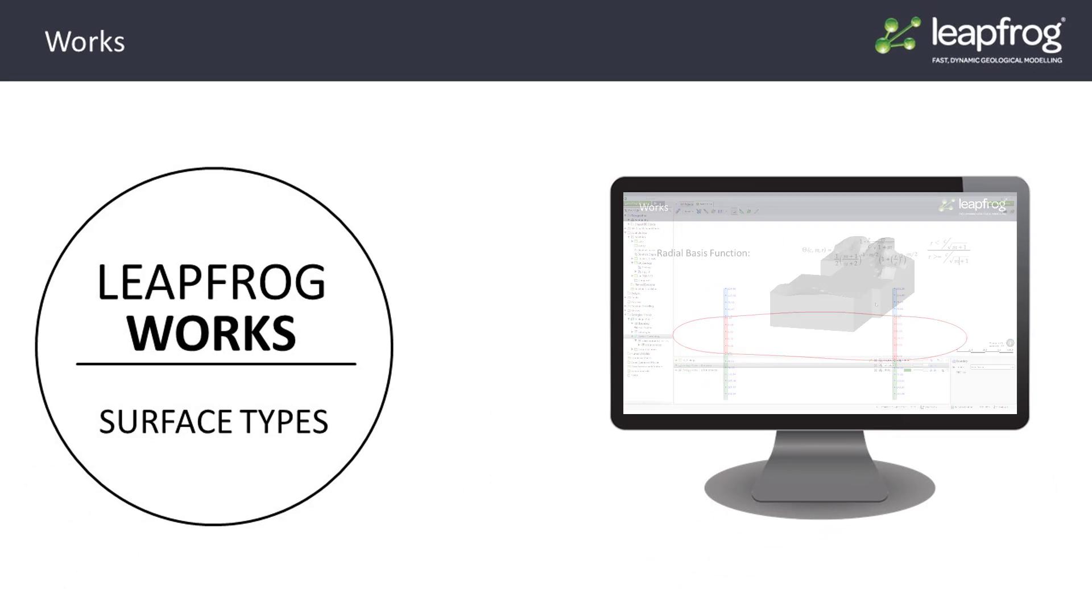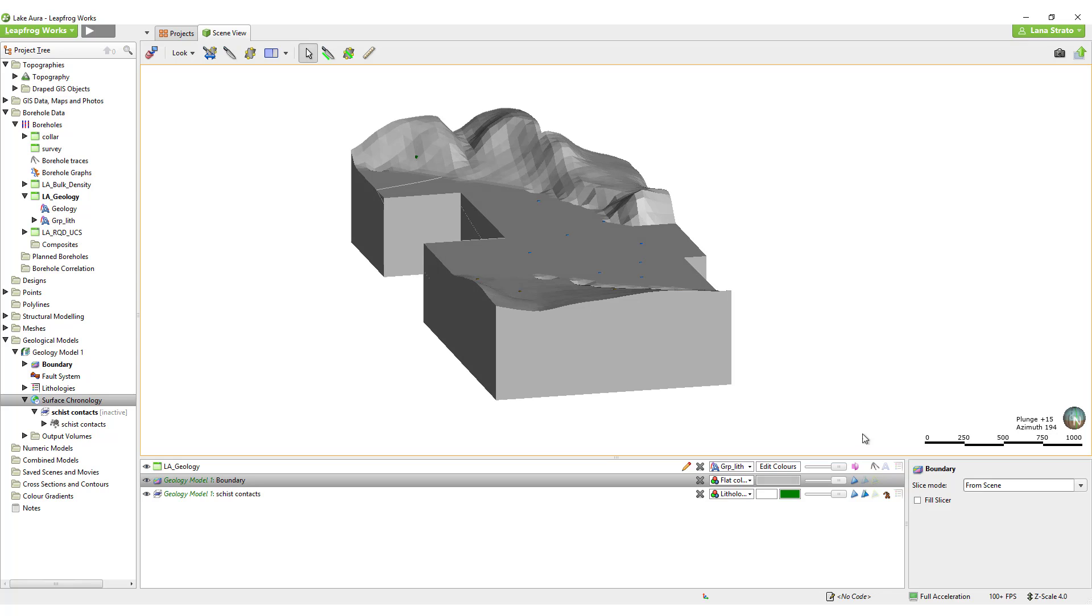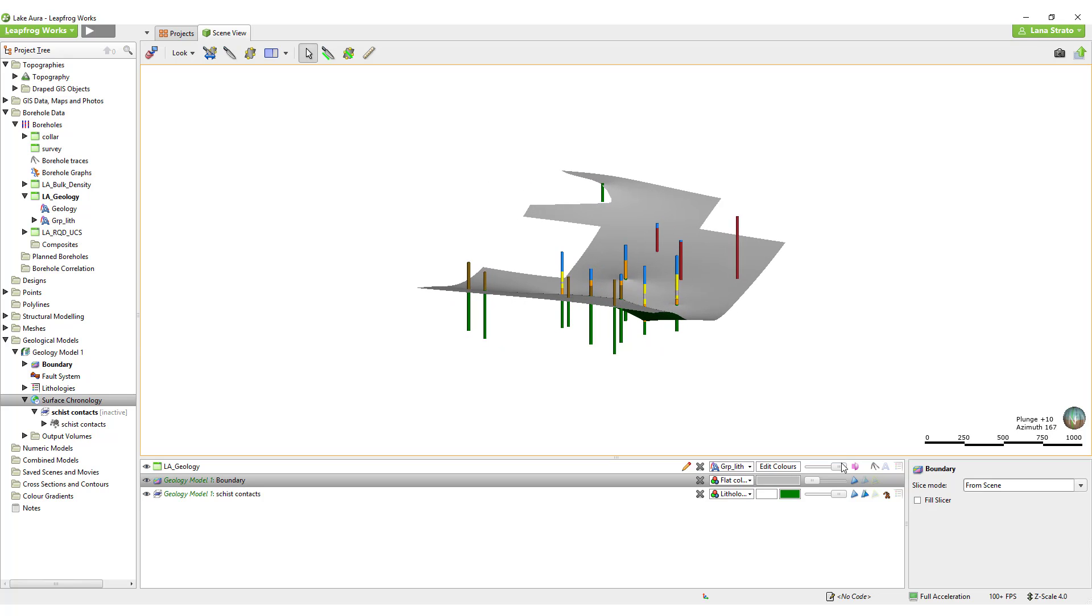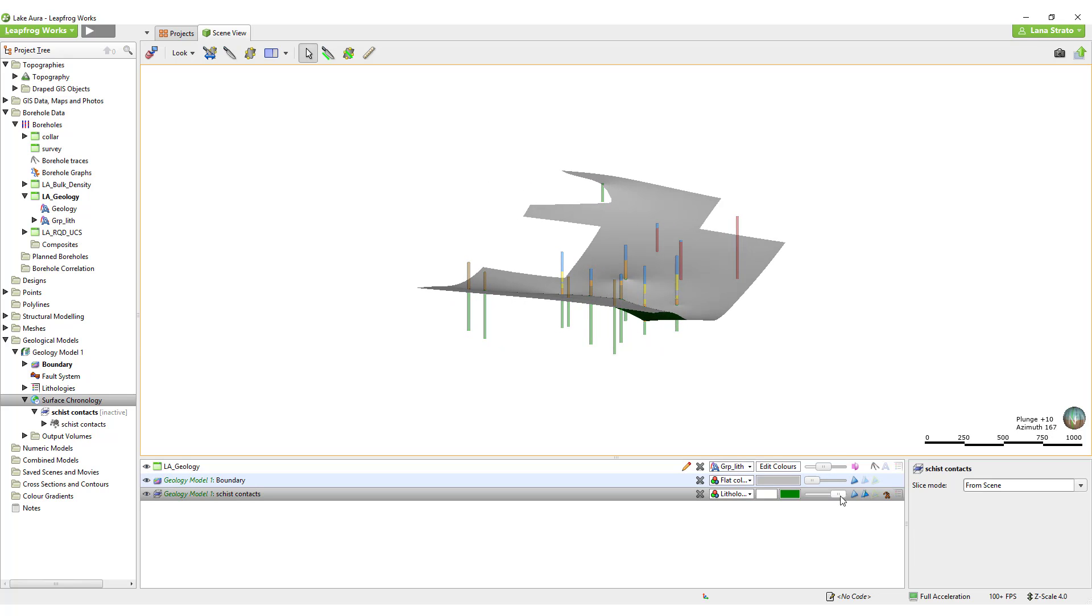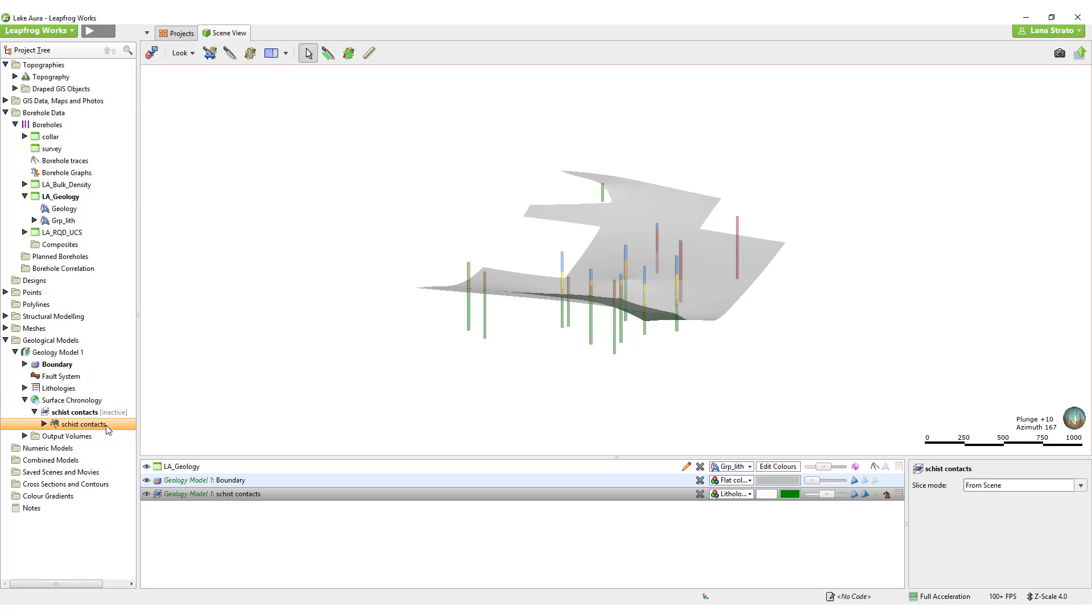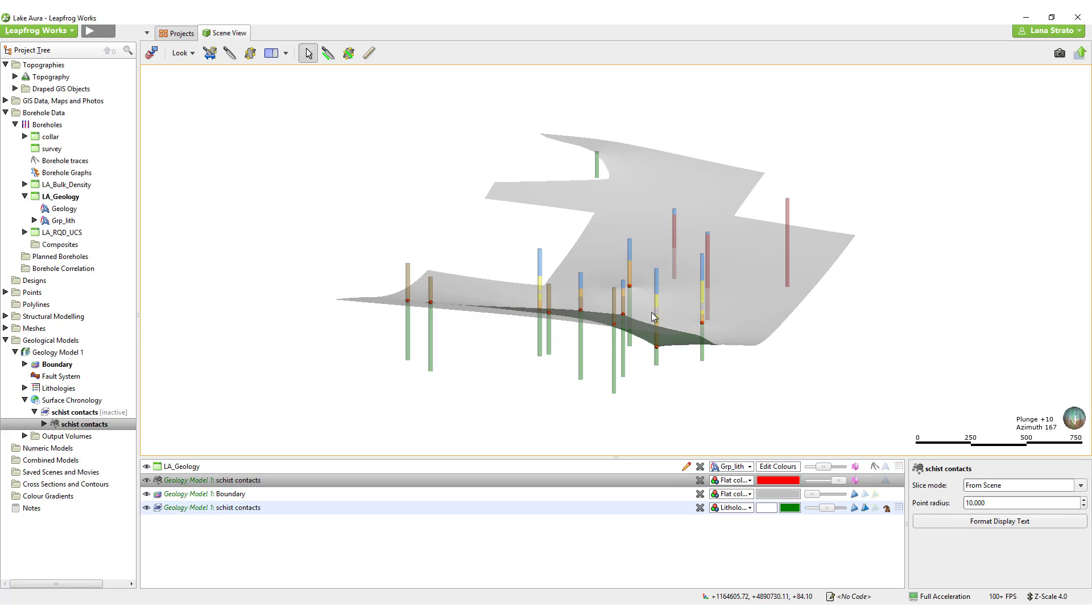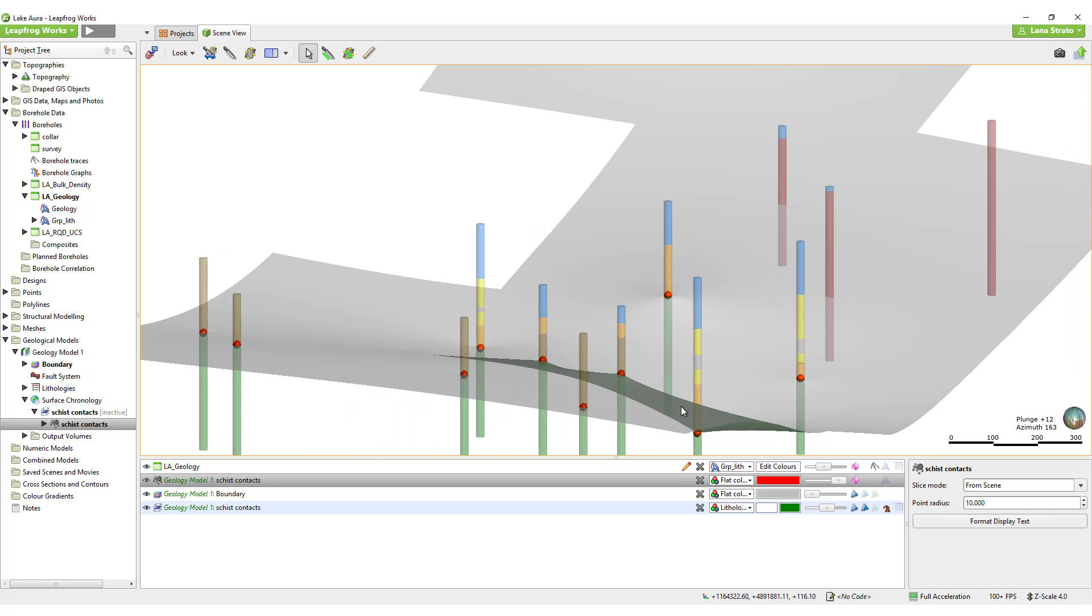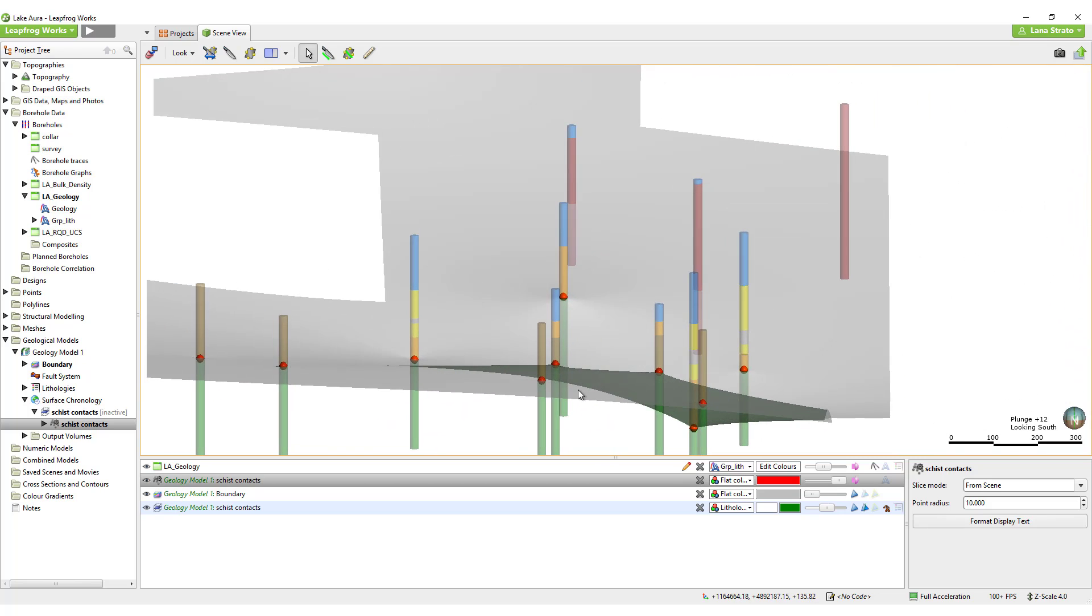One of the most common inputs into LeapFrog is borehole data. When building surfaces in LeapFrog directly from the borehole data, LeapFrog generates contact points at the contact between different units as specified by the users, and then passes a surface through those contact points. The different surface types follow slightly different methods.